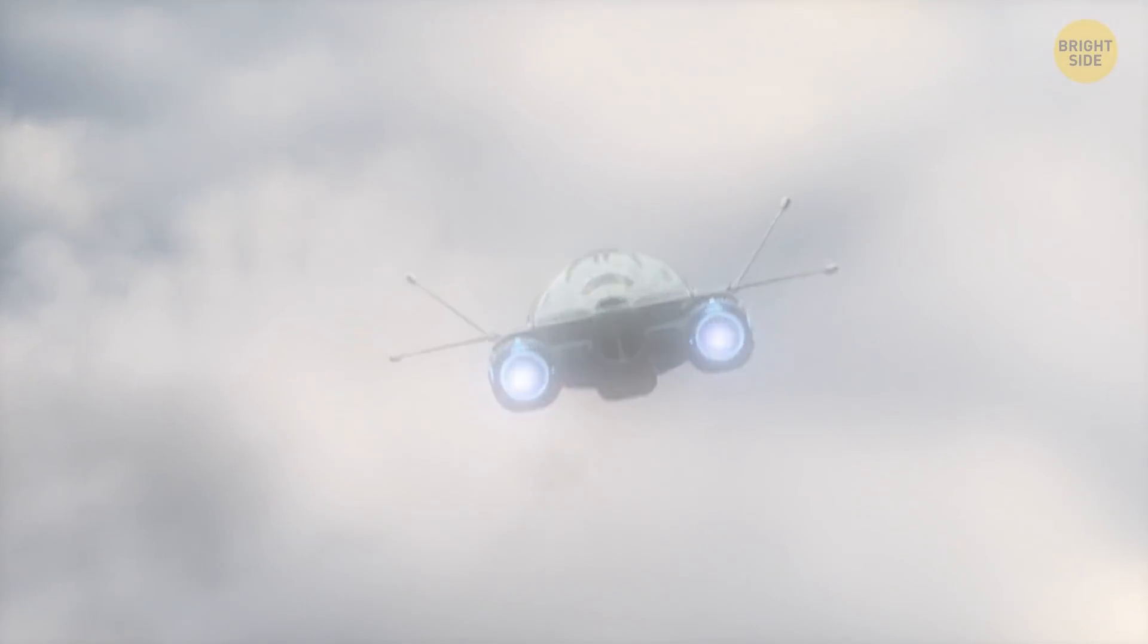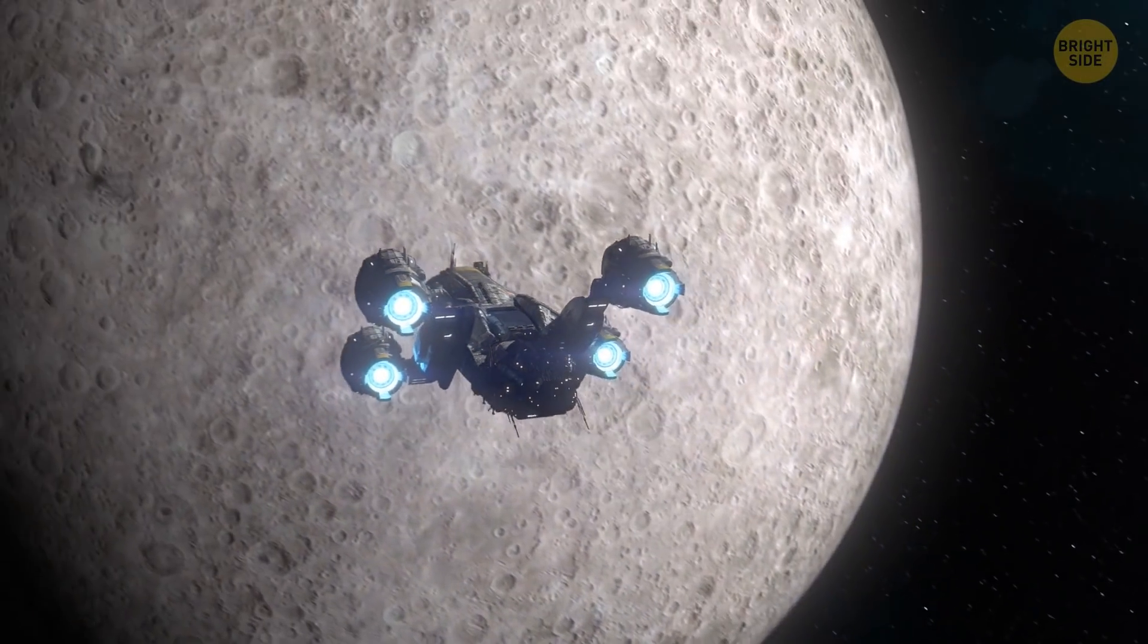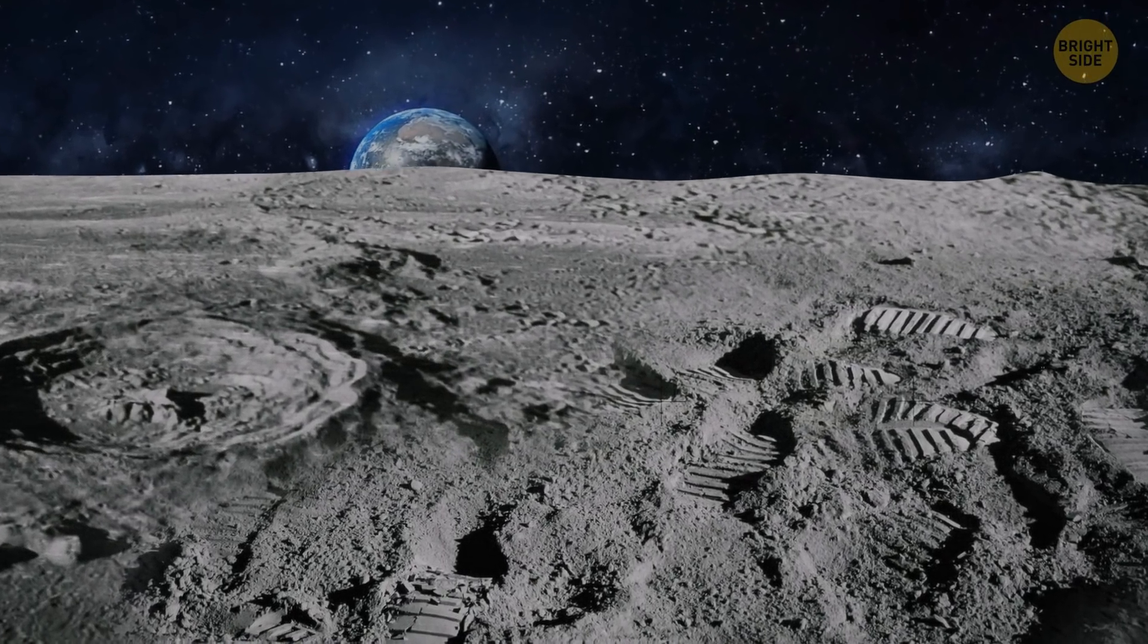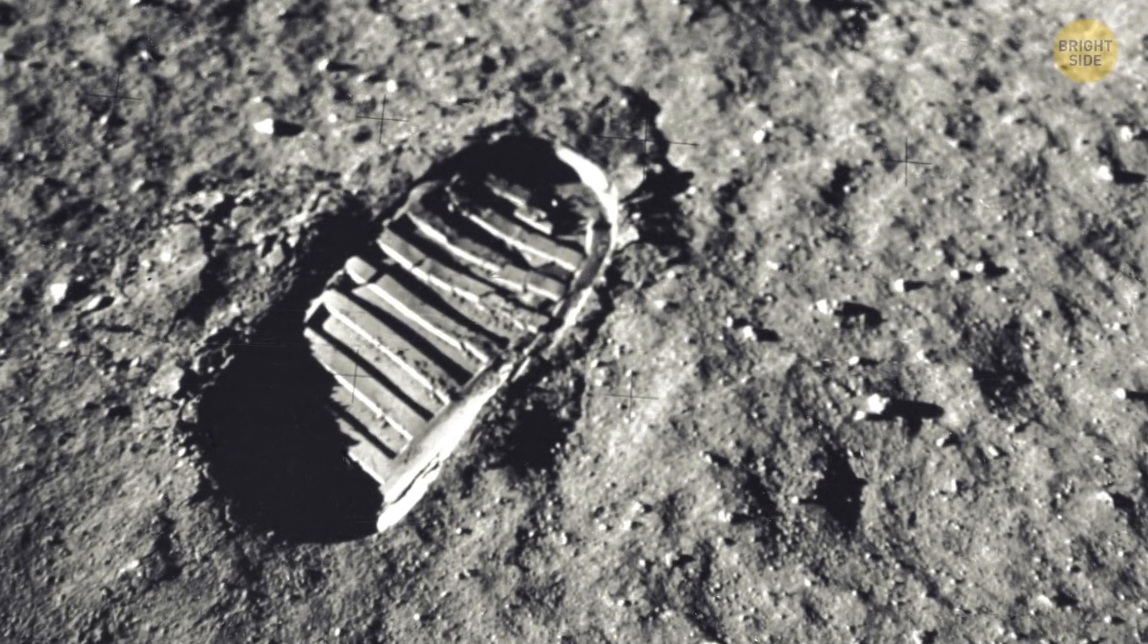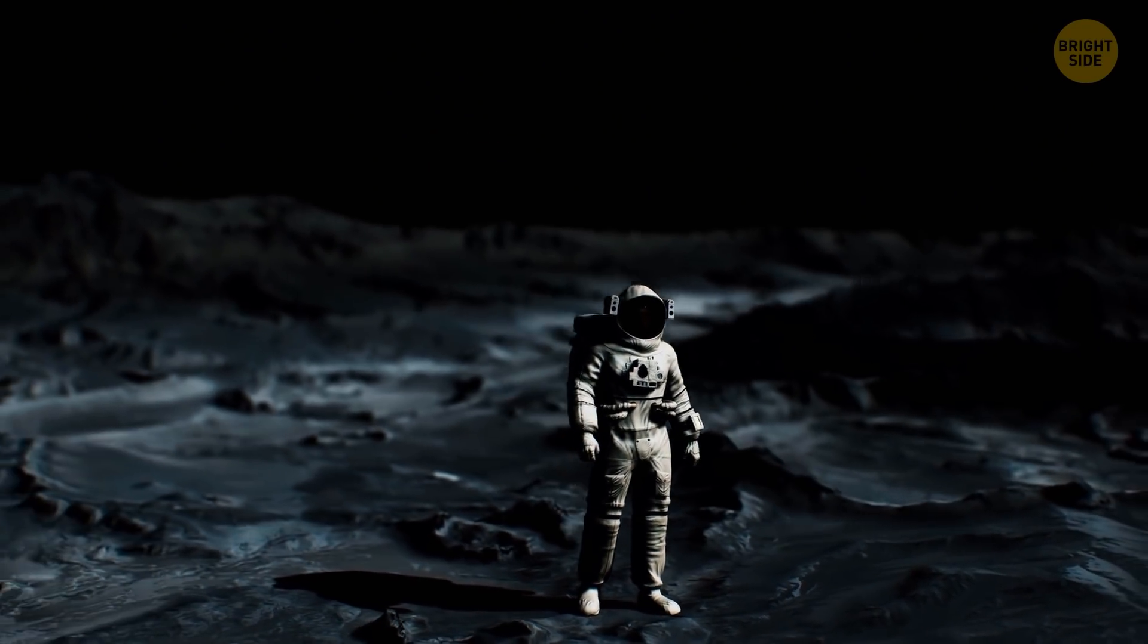If you manage to go to the moon one day and see fresh footprints, that doesn't mean there's someone else there with you. Footprints or similar marks can last for a million years over there because the moon doesn't have an atmosphere. There are no winds, not even a breeze, that can slowly erase those footprints.